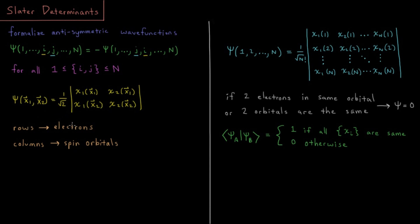Formalizing this to an arbitrary number of electrons, we would get a matrix which is psi 1, 2, all the way up to n. Often we're even so lazy we don't like writing out explicitly x1, x2.